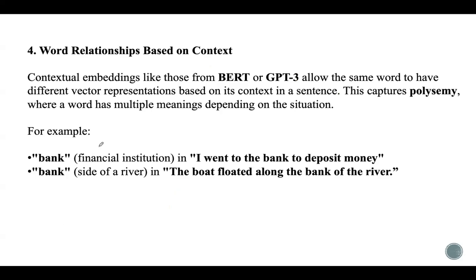Contextual embeddings from models like BERT or GPT-3 allow the same word to have different vector representations based on its context. For example, the word 'bank' will have a different embedding when referring to a financial institution compared to when it refers to the side of a river.